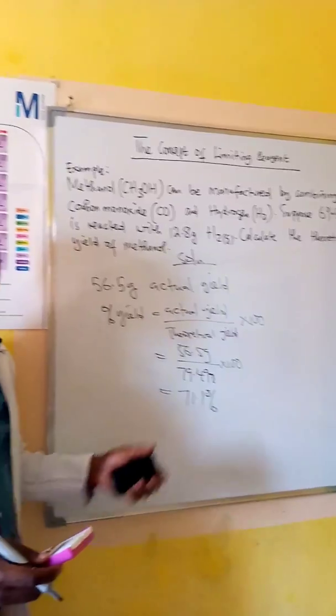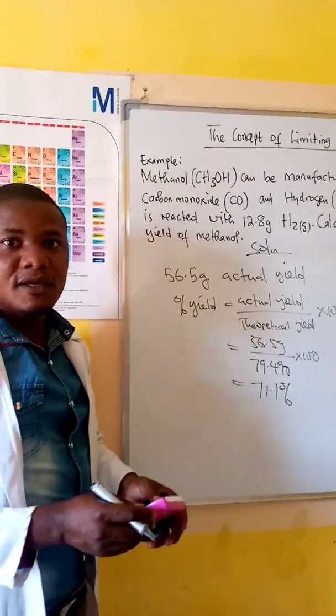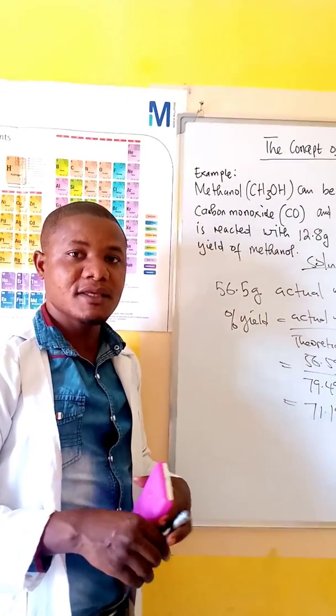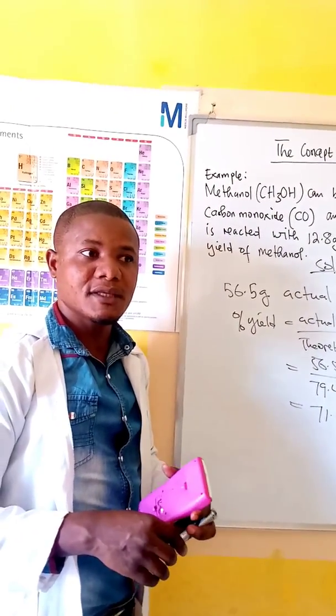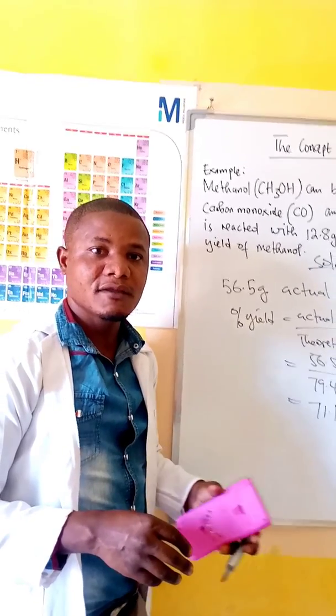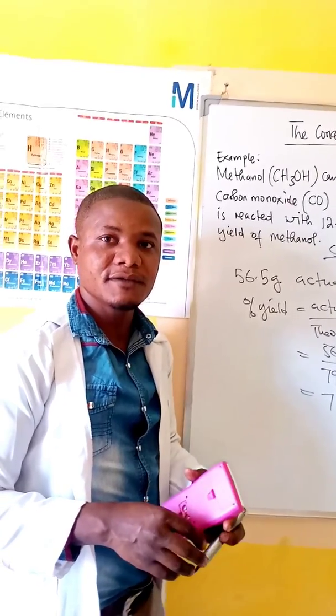So this is how we determine the limiting reagent, theoretical yield, and percent yield. In the next tutorial, we shall look at balancing redox reactions. Thanks for watching.